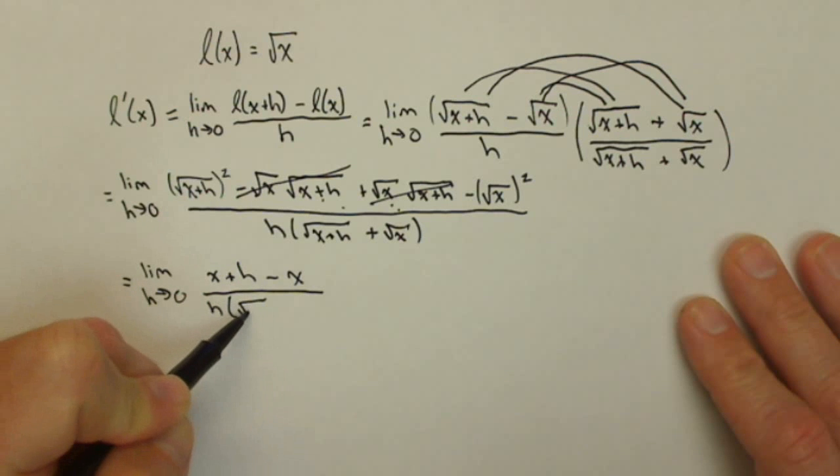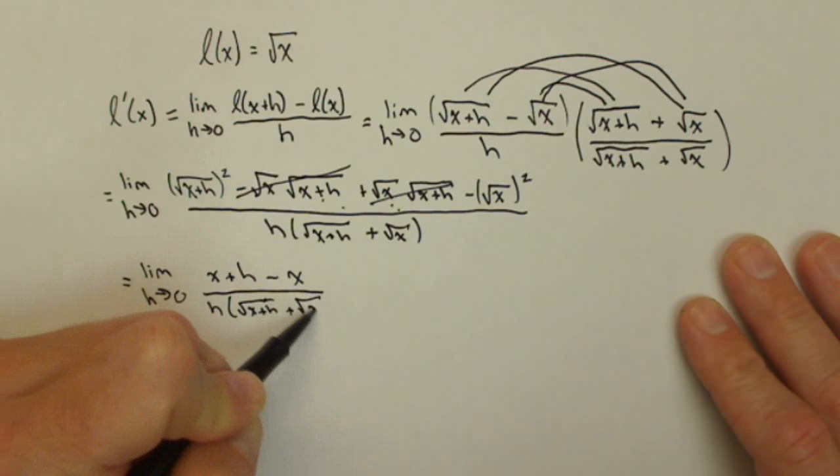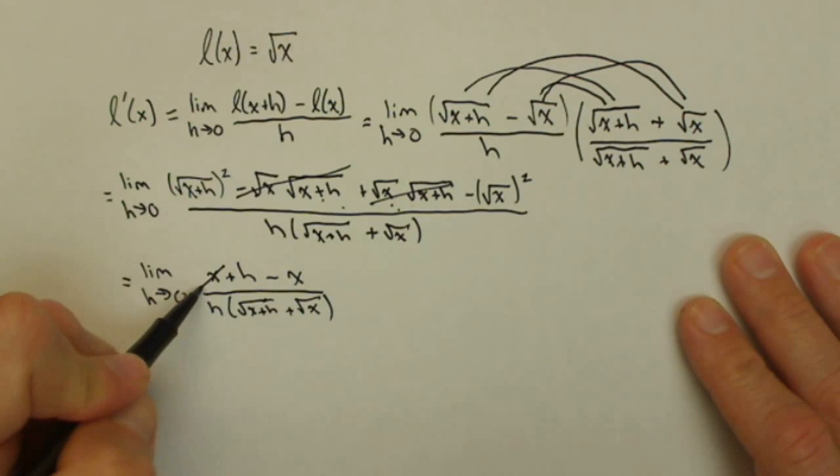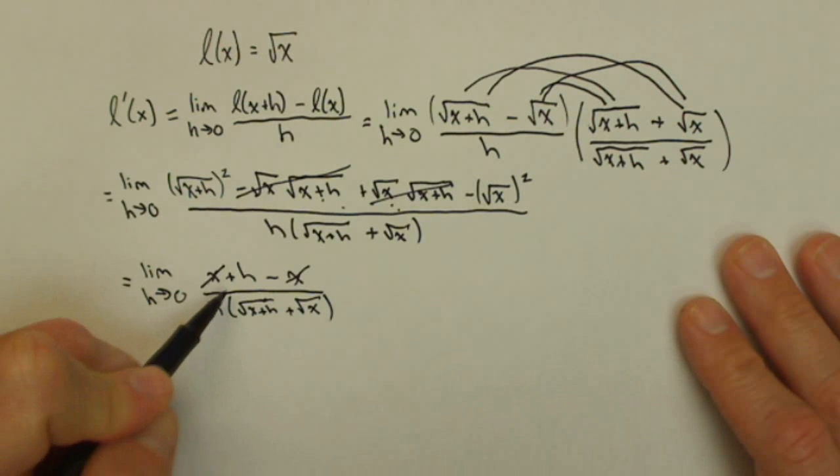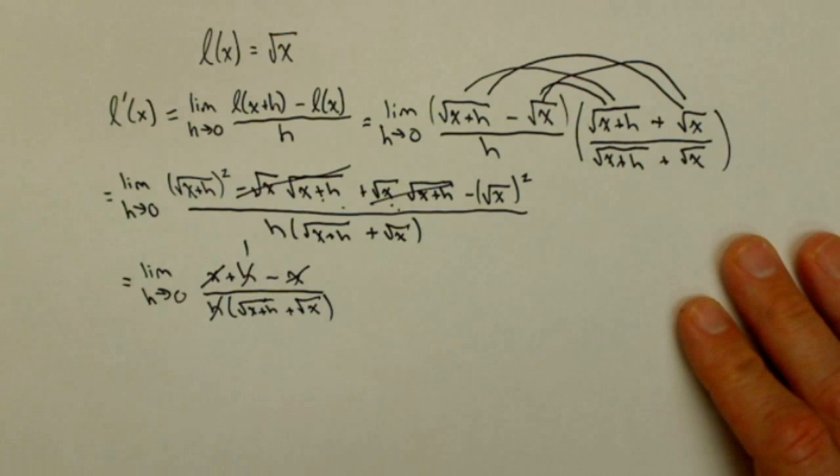H times square root of x plus h plus square root of x. Those x's cancel. And notice now I can cancel also the h's and I just end up with a one on top.